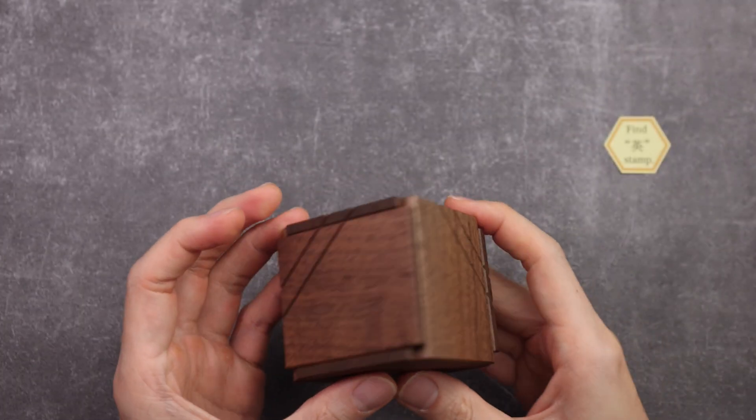The first few steps were simple. After moving four of the panels, this face can be slid up and open. This reveals a hole and a compartment inside, but I cannot find the character Ying.